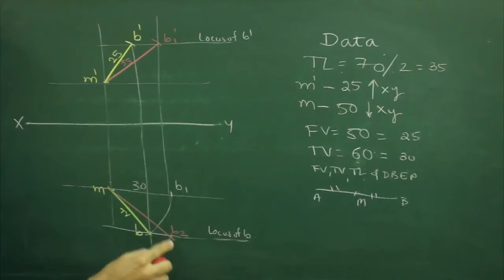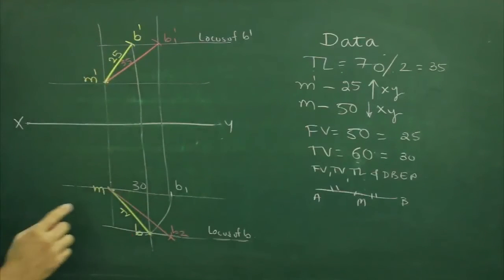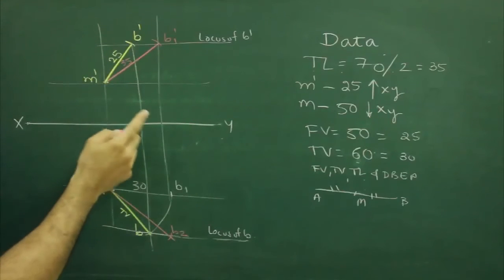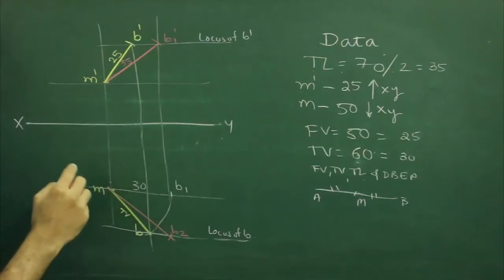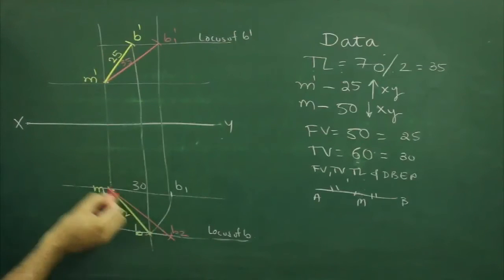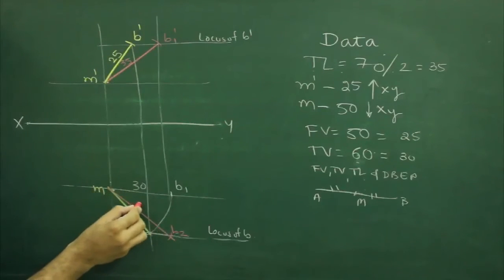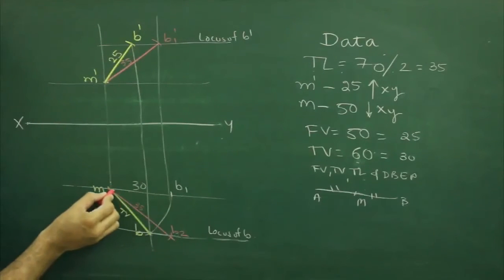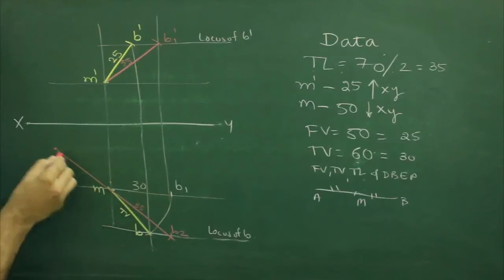Now we have front and top view as well as true length. But if you see, we have a true length as 70. So what we will do, we will extend this. Now we have half of it, so I will extend 35 over here. Wherever it will cut, I will mark that point as A.